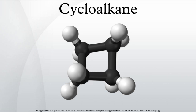Cycloalkanes can be formed in a Diels-Alder reaction followed by a catalytic hydrogenation. See also: cyclohexane, cyclopropane, cyclobutane, cyclopentane, cyclohexane, cyclooctane. References: IUPAC Compendium of Chemical Terminology, Second Edition Online Corrected Version — Cycloalkanes.